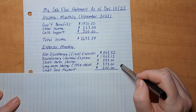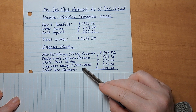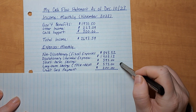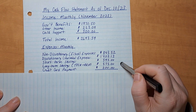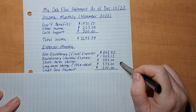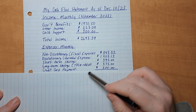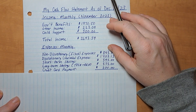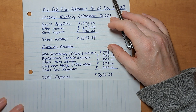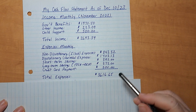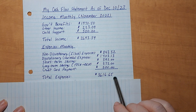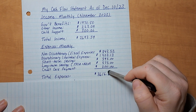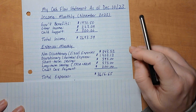Also going out each month is short-term savings of $595 into my savings accounts, and long-term savings of $575 towards my TFSA and RRSP, which are invested. I also put $200 toward a credit card payment every single month. So my total monthly expenses are $3,616.65.